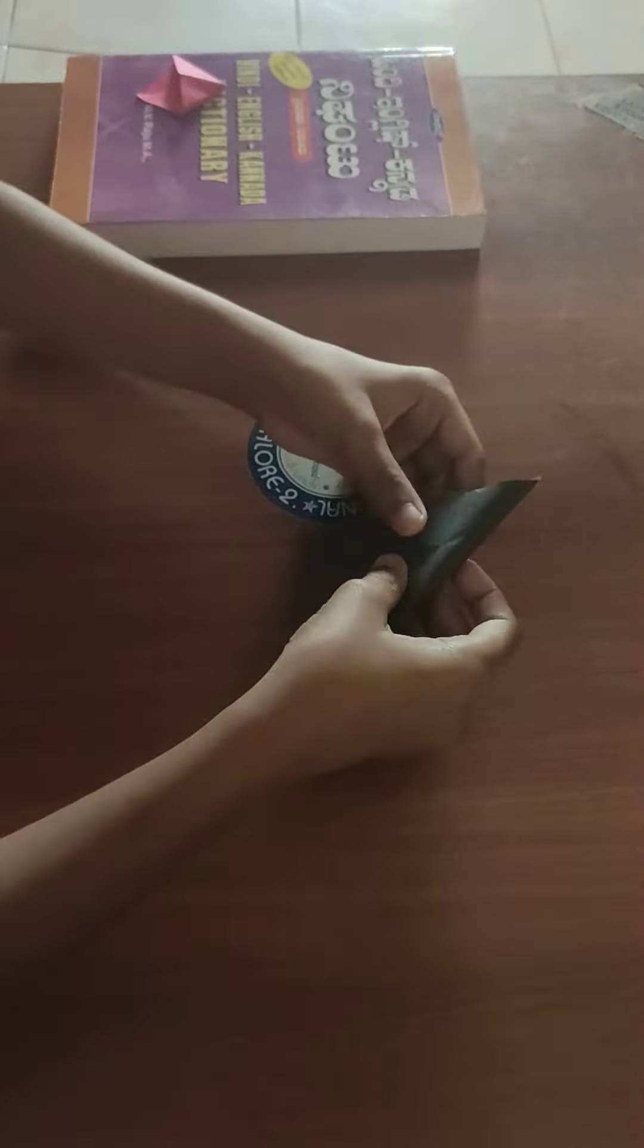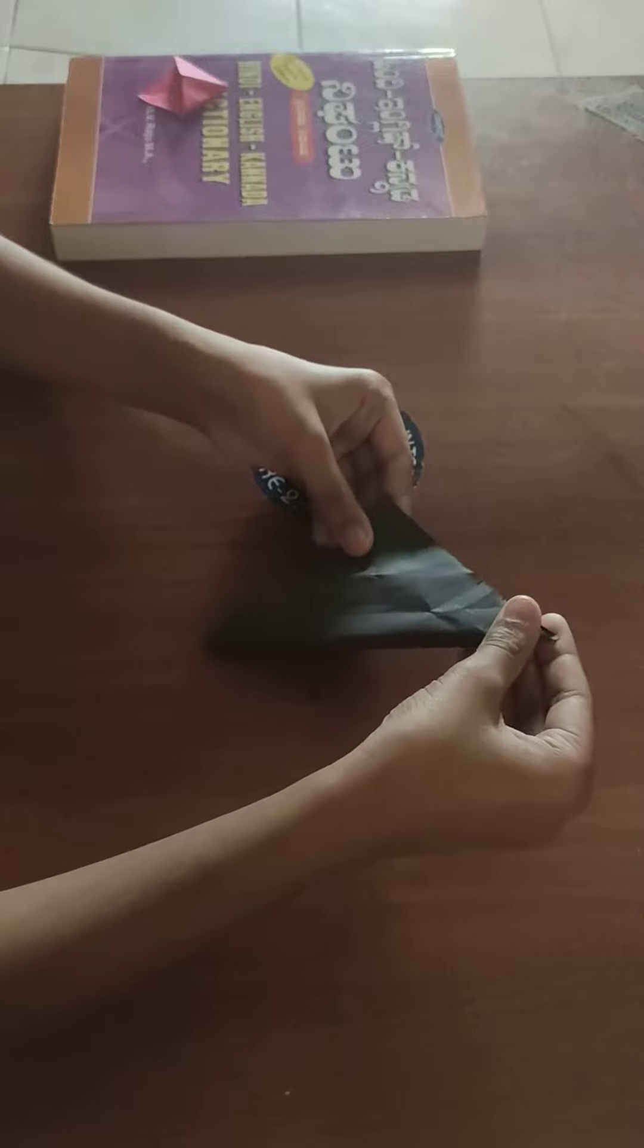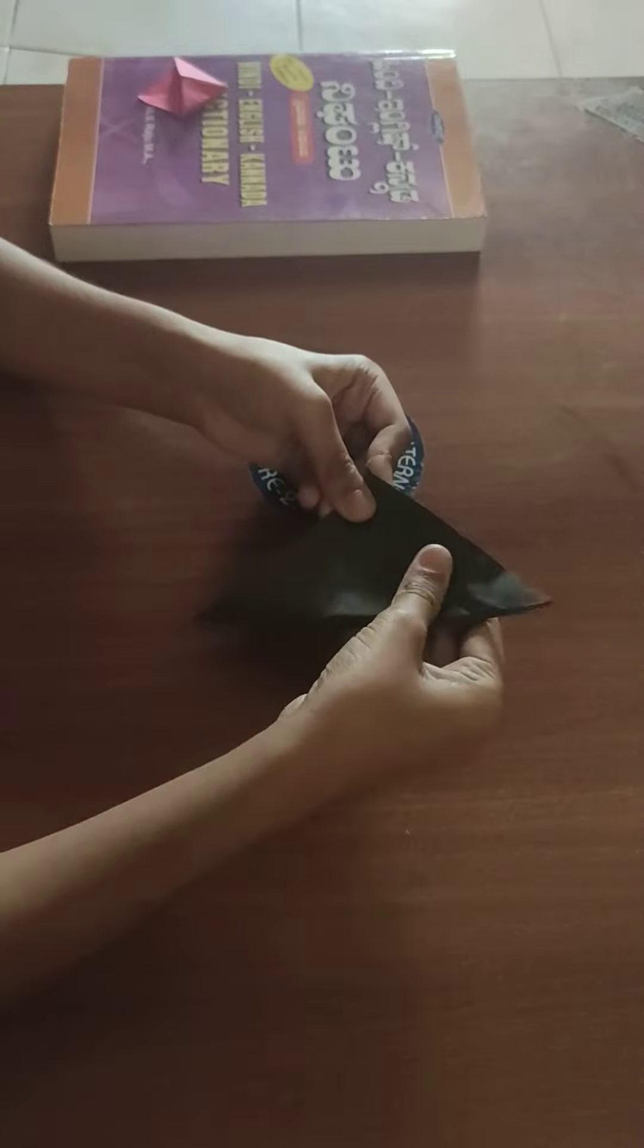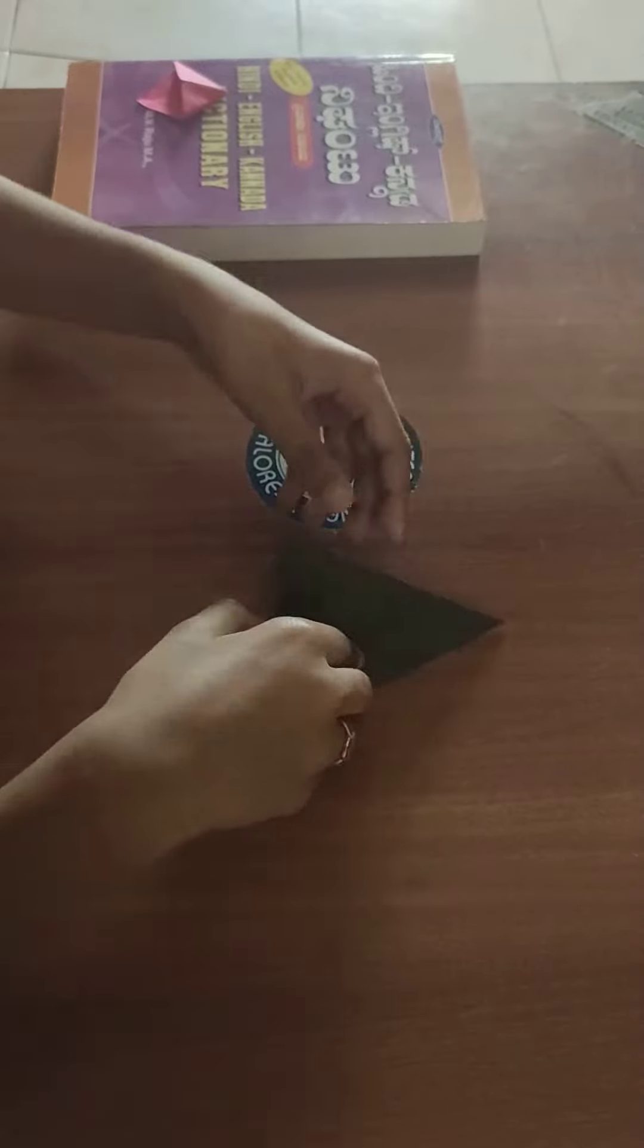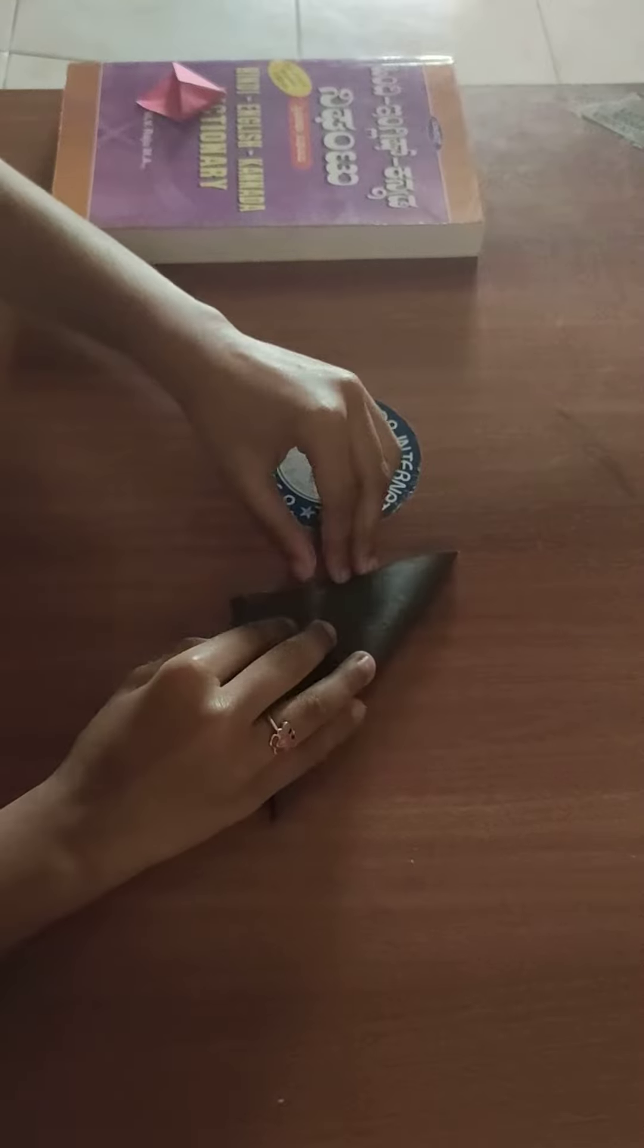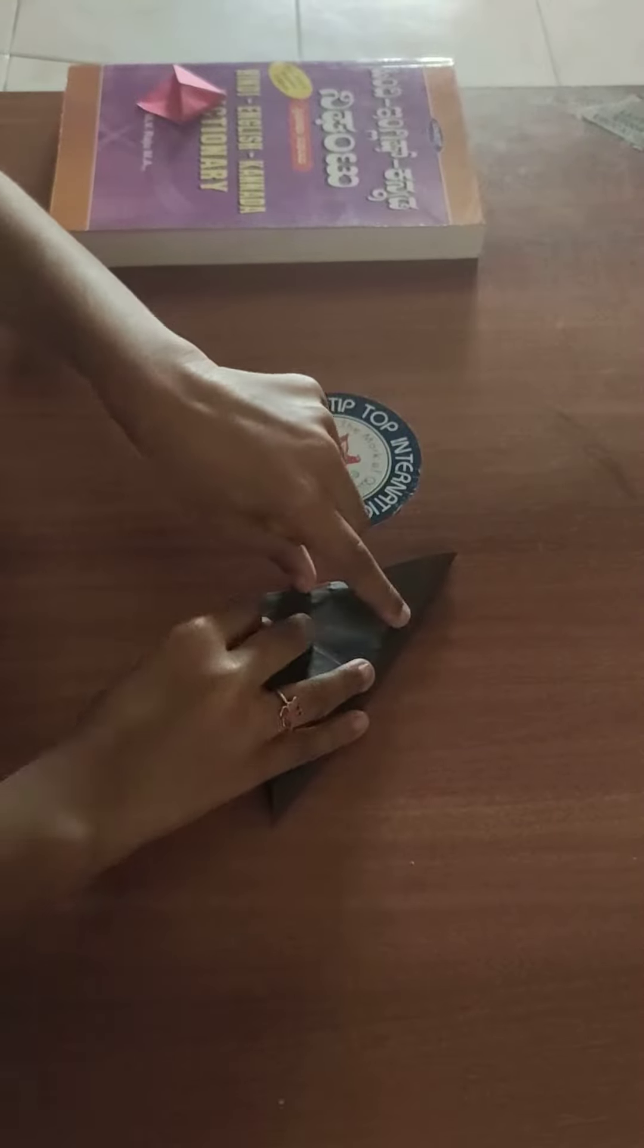First, take a square paper and fold it like a triangle. Then open it and do the same thing on the other side.